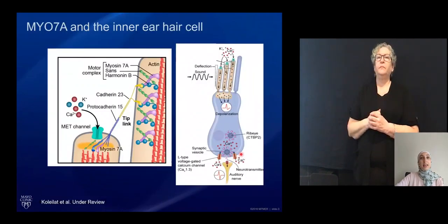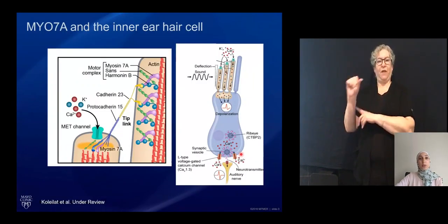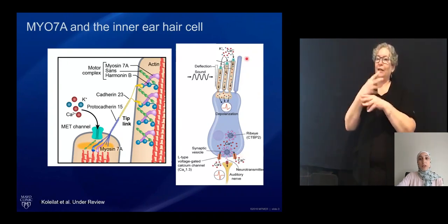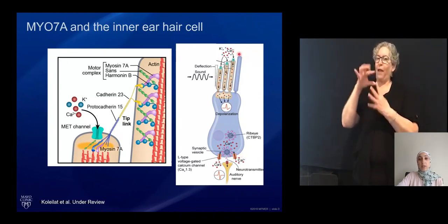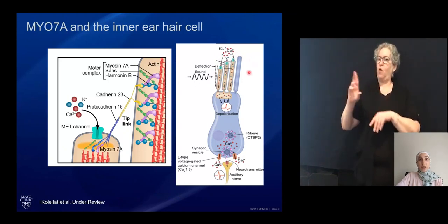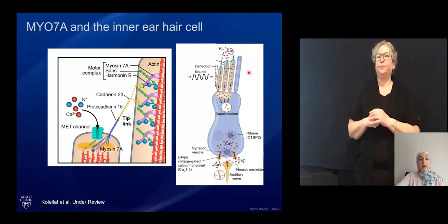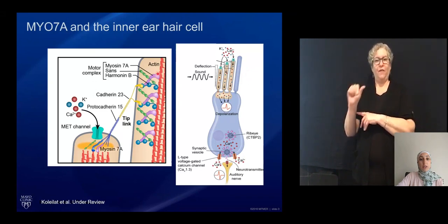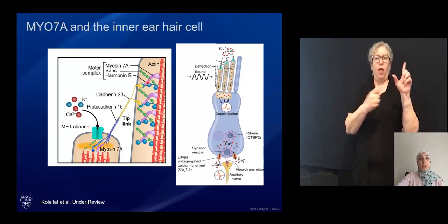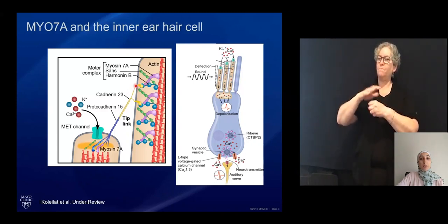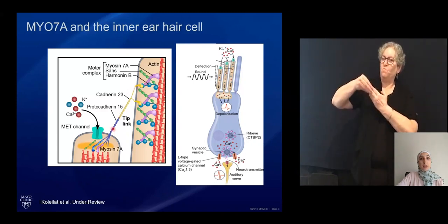Myosin 7a is a motor protein found in the stereocilia, which are these finger-like projections found in the image on the right of the hair cell. Myosin 7a is a purple protein found in the image on the left, and its role is to maintain the tension in the tip-link structure, or the connecting structure between two stereocilia.